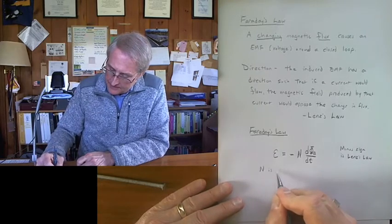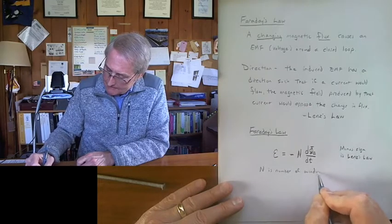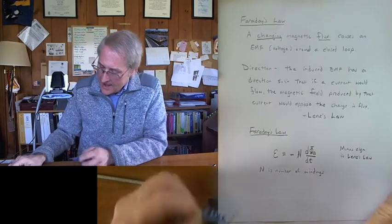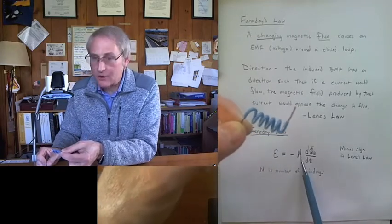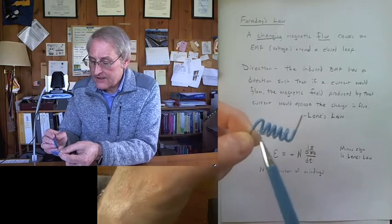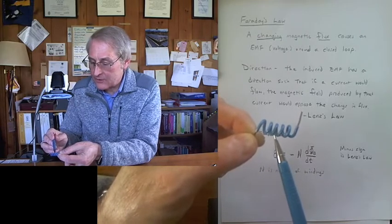So N is the number of windings. And you can see sort of why it would be proportional to N. We're going to test that. If you think of going around one loop of wire and coming to the next one, and then going around the next one, those two loops are in series.